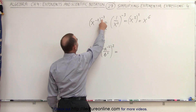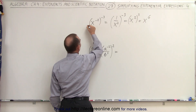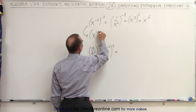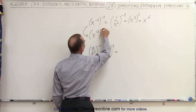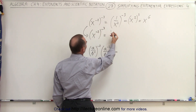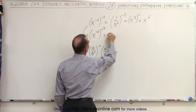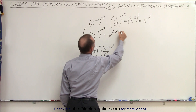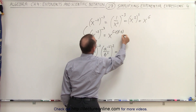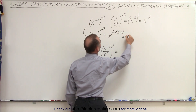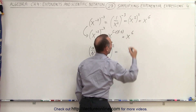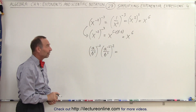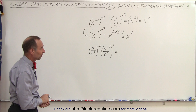Or we could have just skipped all that and simply said: we have an exponent raised to an exponent, so all we have to do is multiply the exponents. x to the minus 2 raised to the minus 3 power is simply x to the minus 2 times minus 3 power, which is x to the 6th power. We get the same result, and that is a lot faster and easier.